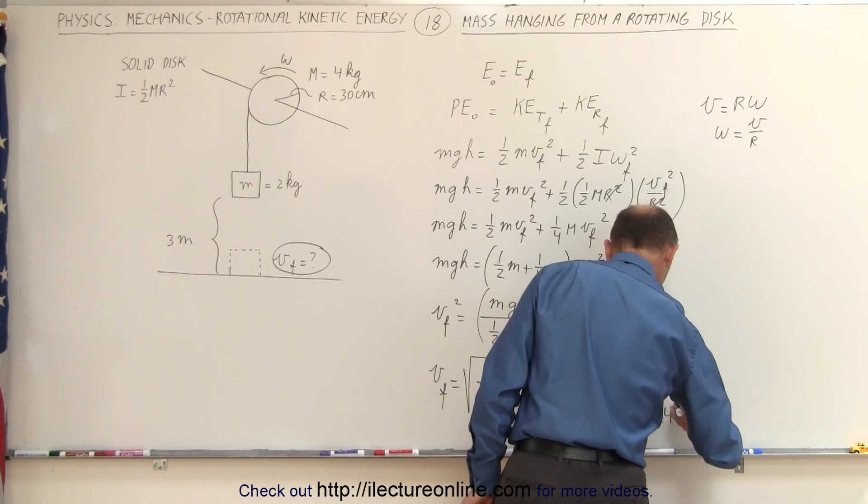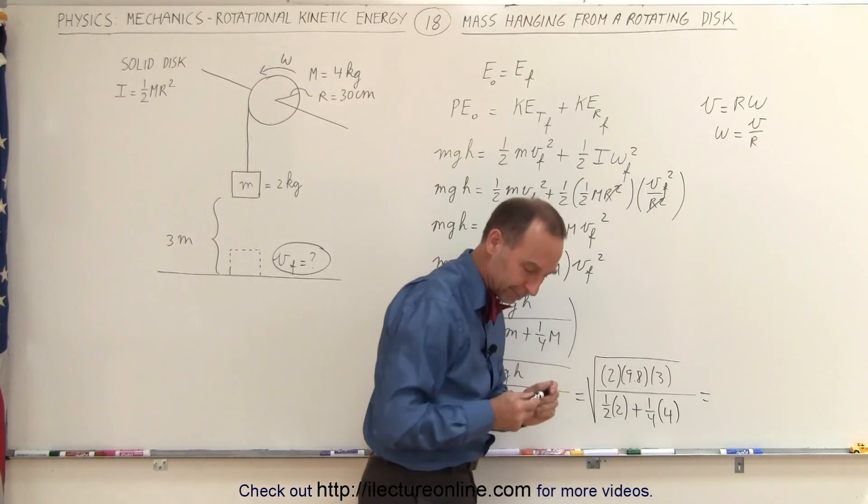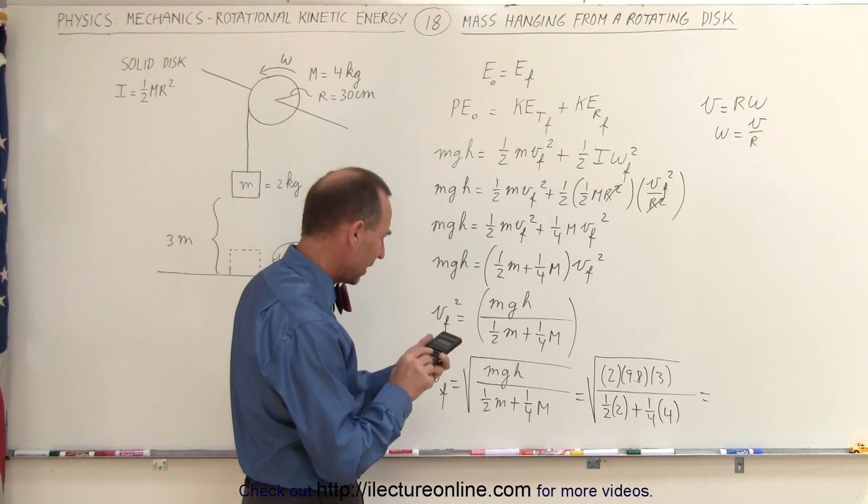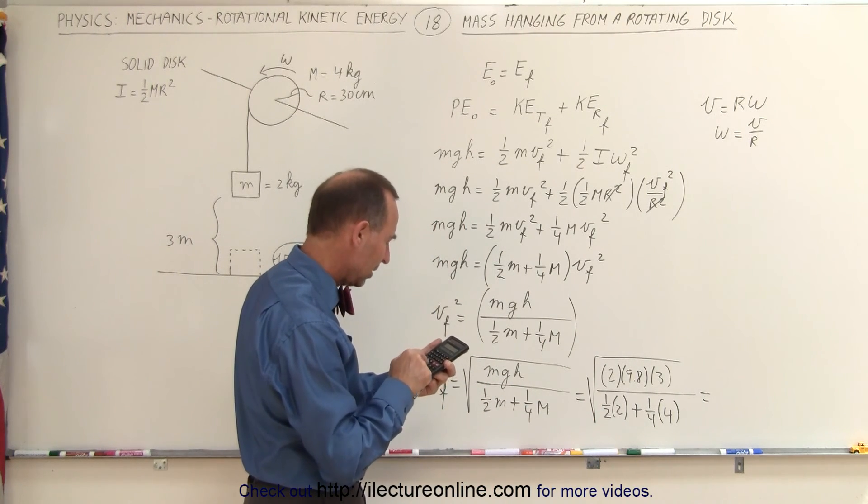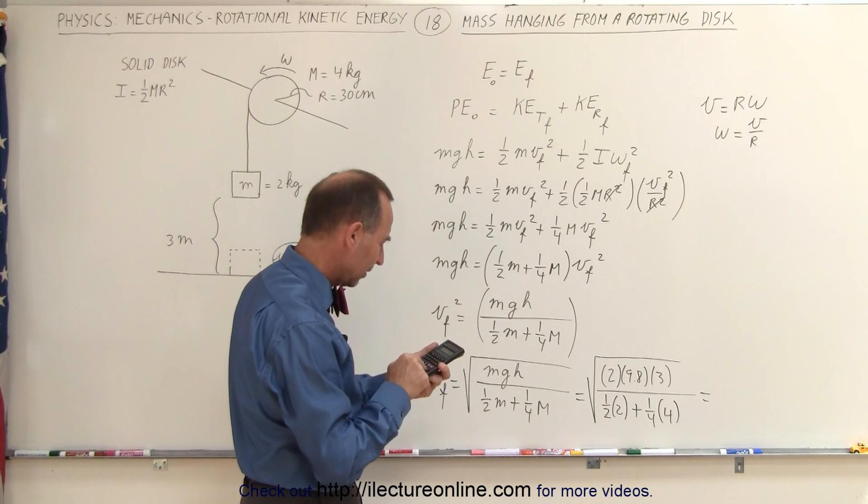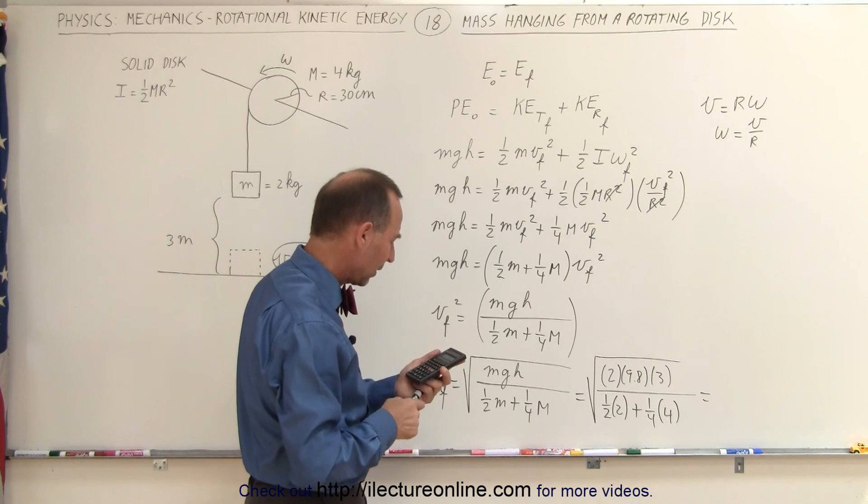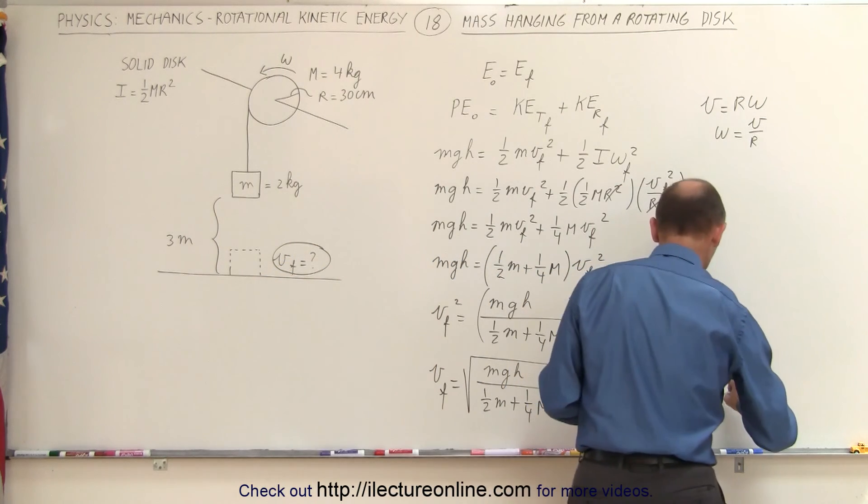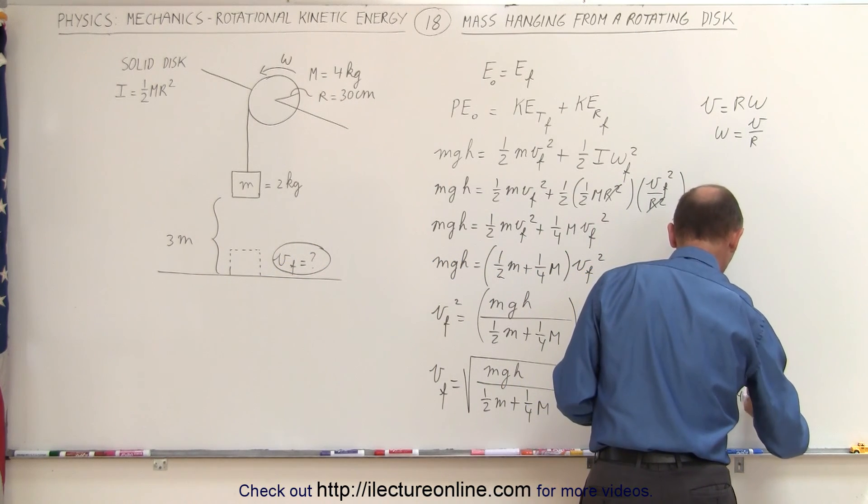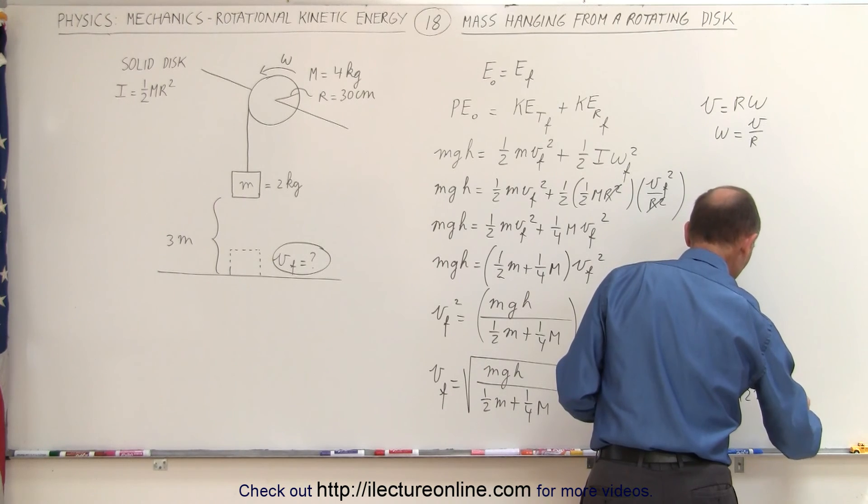It's almost like I picked the numbers, isn't it? All right, with a calculator, let's see what we get. 2 times 3 times 9.8 divide by 2 equals, and then we take the square root of that, and we get 5.42 meters per second.